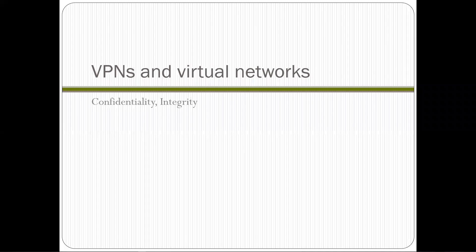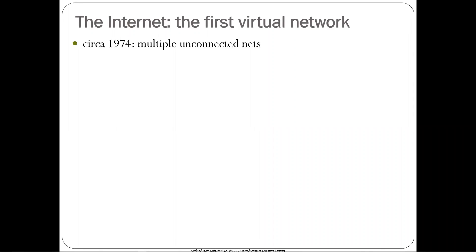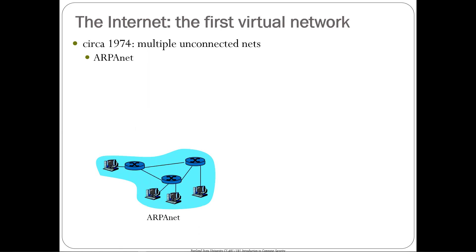Virtual private networks are more common for doing confidentiality and integrity. Some VPNs use IPsec underneath, but they don't have to. To explain what a VPN is doing, I first need to talk about the internet and how it works. The internet was basically the first virtual network — it wasn't directly tied to a physical network or physical implementation. It's a logical network that can support a whole bunch of other physical networks underneath. Before the internet, around 1974, you had multiple disconnected networks: ARPANET was a packet network from the Department of Defense, a packet satellite network called ALOHA, packet radio, and the phone network — a circuit-switched network.